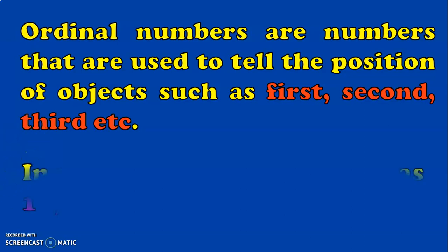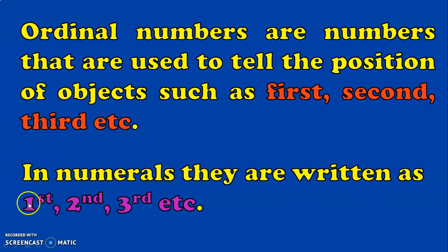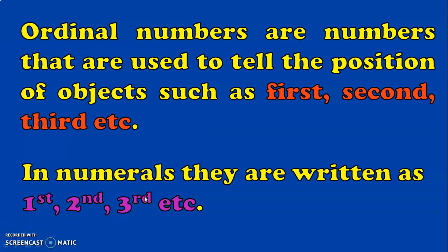Let us see how ordinal numbers are represented in numerals. First is represented by 1 with 'st'. Second is represented by 2 followed by 'nd'. Third is represented by 3 followed by 'rd'. It is very important to teach the concept of ordinal numbers clearly in class 1 because this concept travels with children throughout their higher classes.